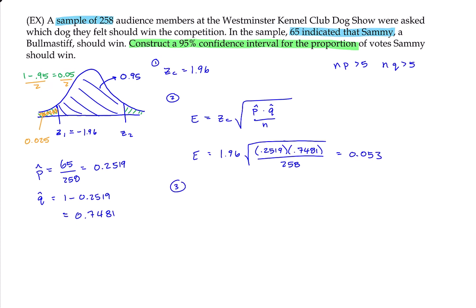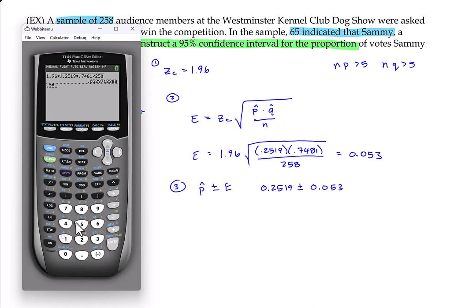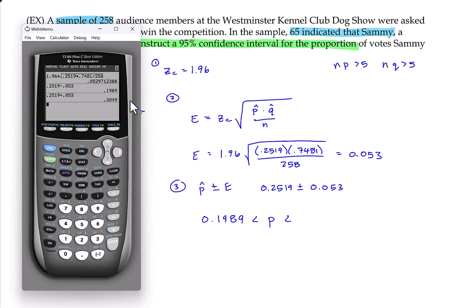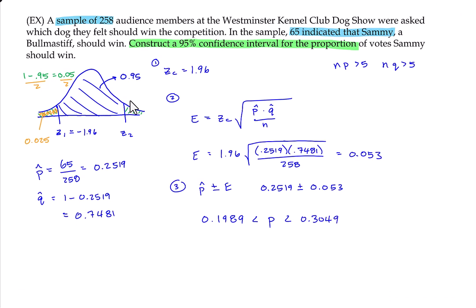To create my confidence interval, I just need to take my point estimate plus or minus that margin of error. So in this case, that would be 0.2519 plus or minus 0.053. And let's see what the endpoints are. So 0.2519 minus 0.053, and 0.2519 plus 0.053. So I'll take this to, well, I'll just use the decimals I have here. So 0.1989 less than p, which is the proportion for the population now, and 0.3049. Alright. So it looks like about 19.9% to 30.5% is the total percentage of actual votes that Sammy should win.